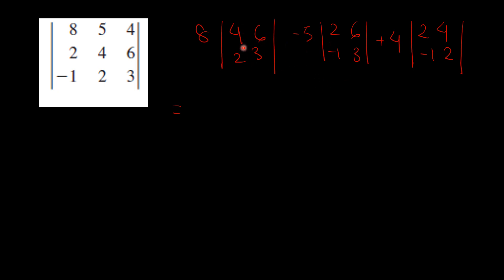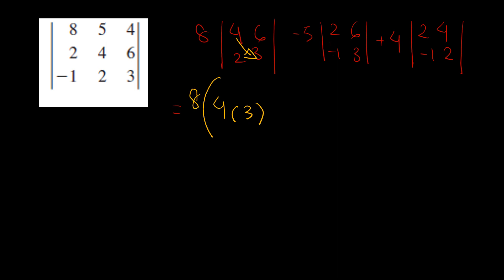Now let's do it on another page. This is a 2 by 2 determinant, so we'll have to solve this first. So 4 times 3, and don't forget it's also multiplying by 8. So 8 times 4 times 3, and then a negative when we go in the other direction — a negative times 2 times 6. And now let's move on to the next one: negative 5 times 2 times 3.